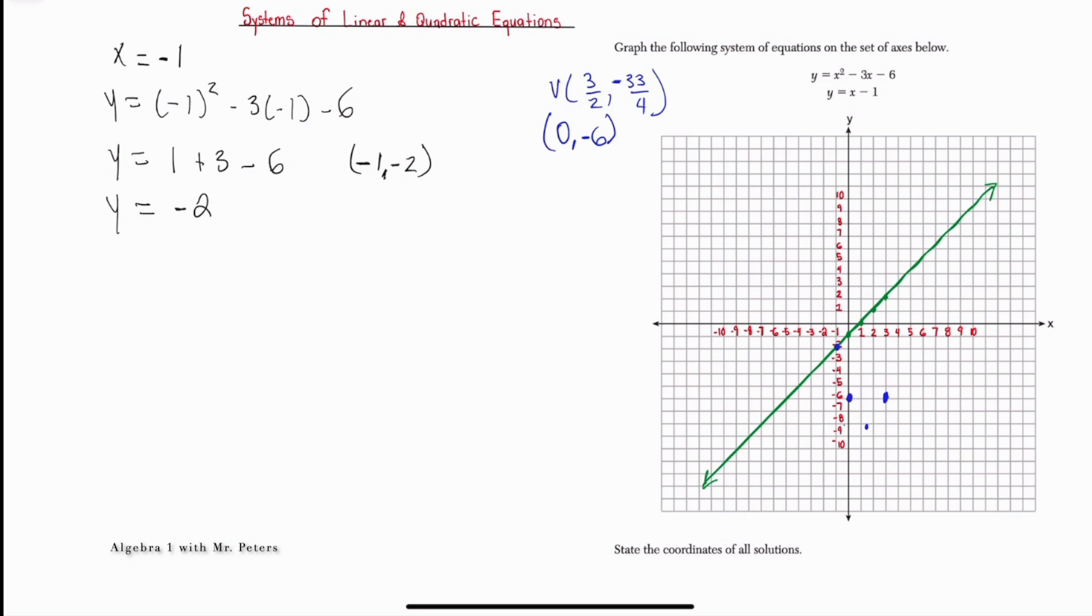Now when you think about it, math family, for us to get from x is 1 and 1 half to x is negative 1, we had to move 2 and 1 half spaces to the left. Now if we move 2 and 1 half spaces to the right to find an equivalent point, we're going to be at when x is equal to 4. So when x is 4, it's going to have the same y-value as when x is equal to negative 1, which means the y-value is negative 2.